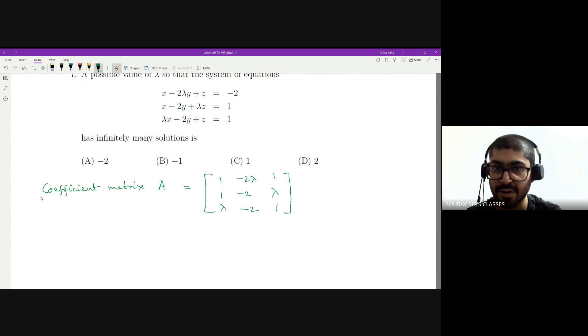If we ignore the constants, which we are supposed to do, we are just supposed to check the coefficient matrix. So if we are supposed to check the coefficient matrix, then we have the values. Now we have to check the determinant of this.